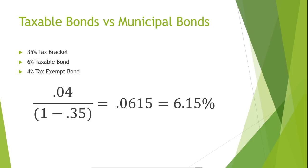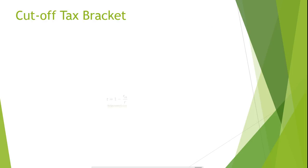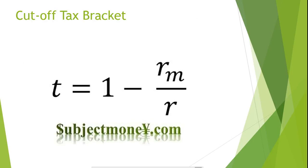We can also use a formula to calculate the cutoff tax bracket: 1 minus RM over R. The yield ratio, RM over R, is the key to determining the attractiveness of investing in municipal bonds. The higher the yield ratio, the lower the cutoff tax bracket, and therefore the more individual investors that choose to invest in tax-exempt municipal bonds.